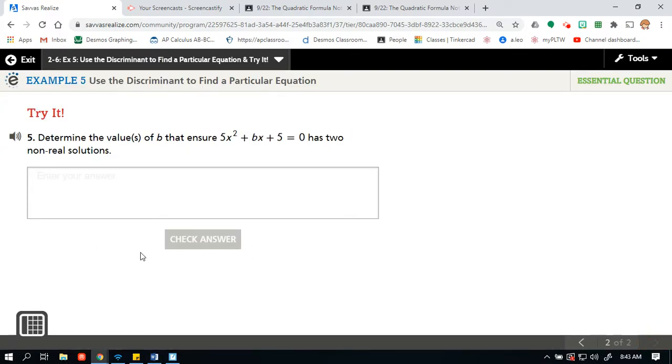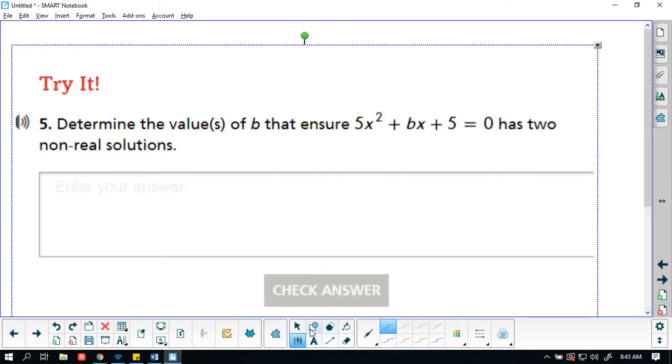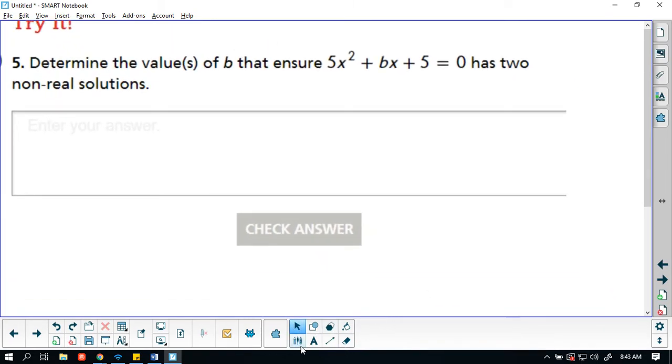Now let's look at the triad, because I think the triad is actually a lot different than the example. So I want to just kind of do this try it with you guys. So here we have, again, we want two non-real solutions. So thinking about that, that's b squared.